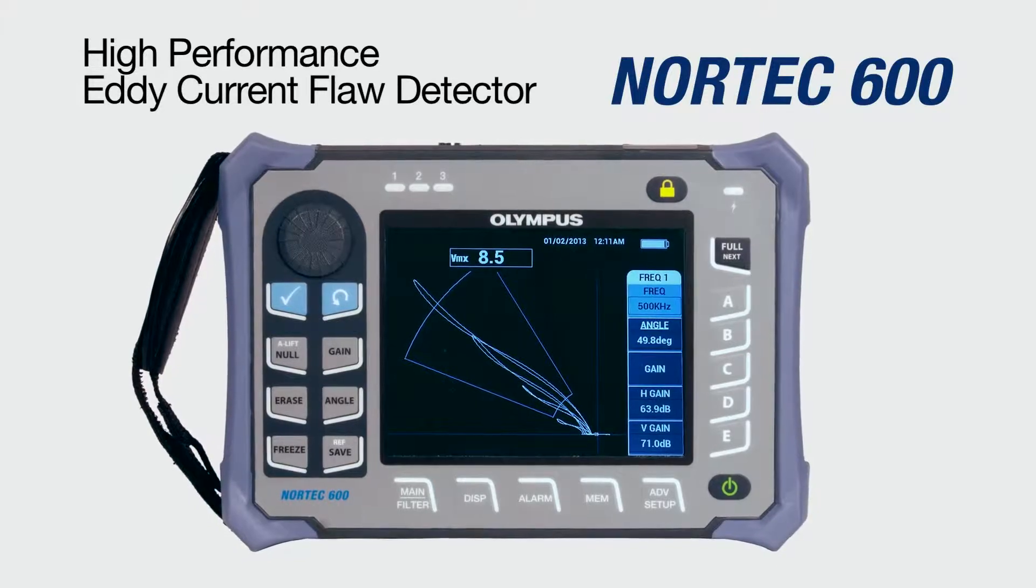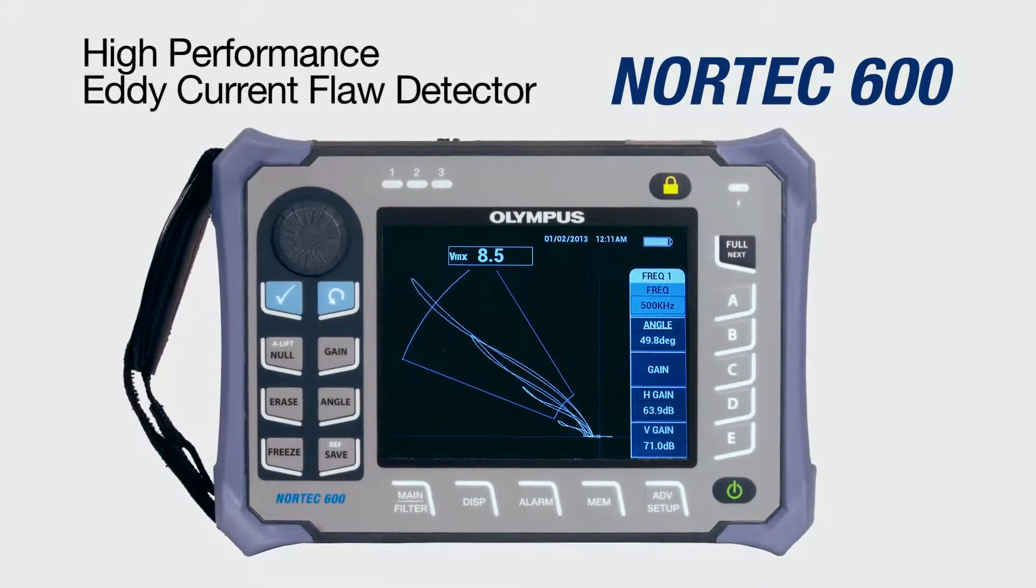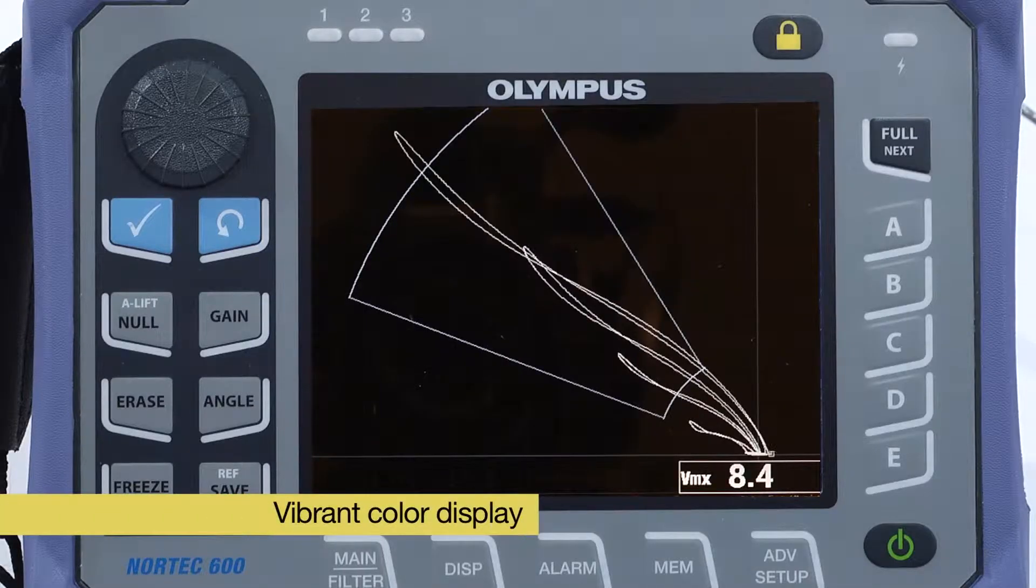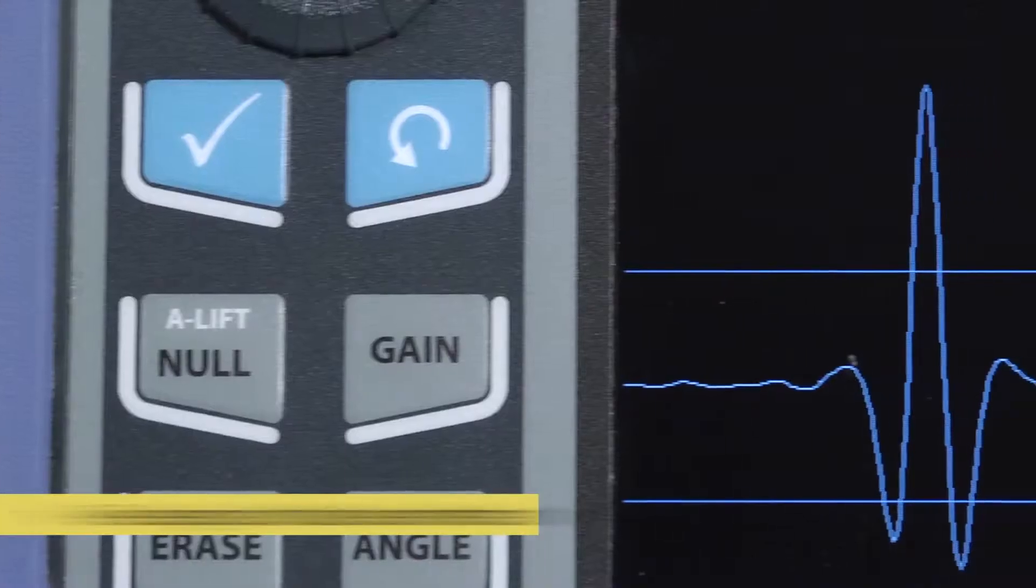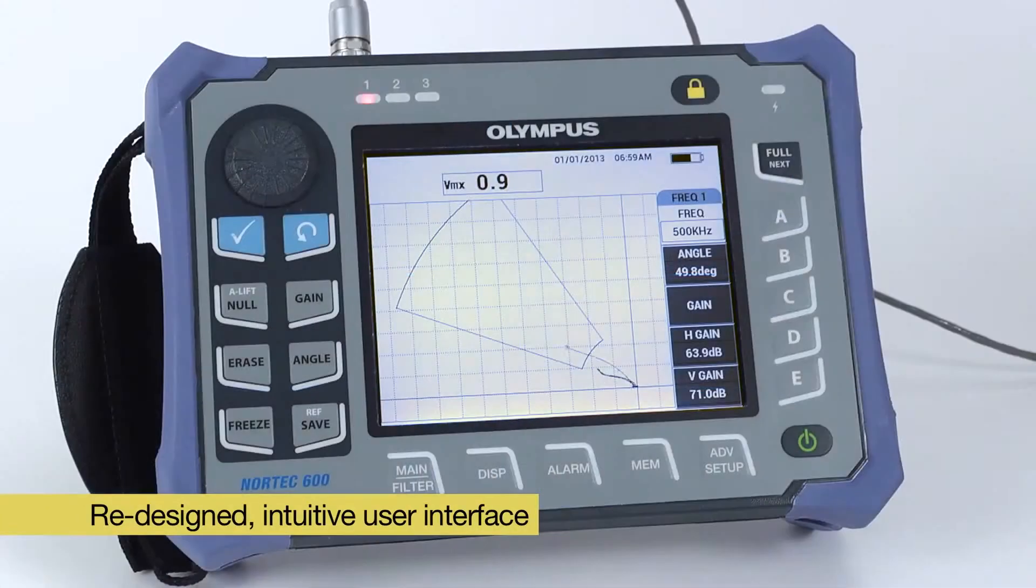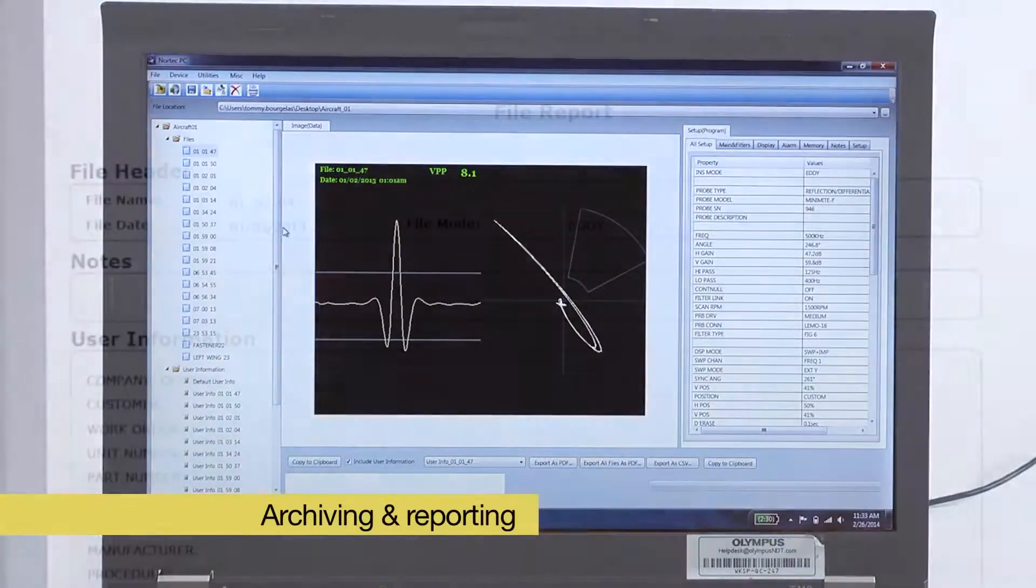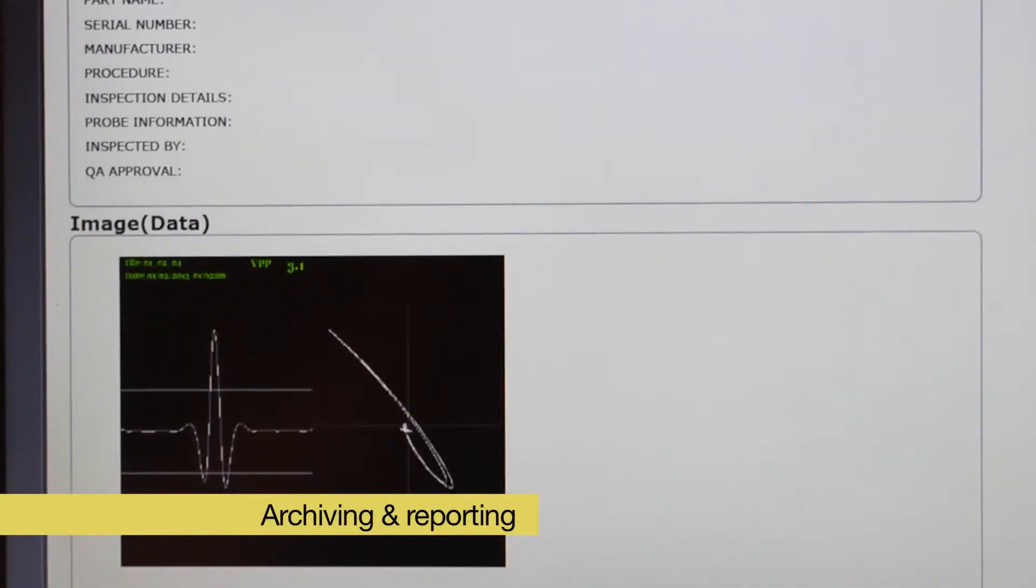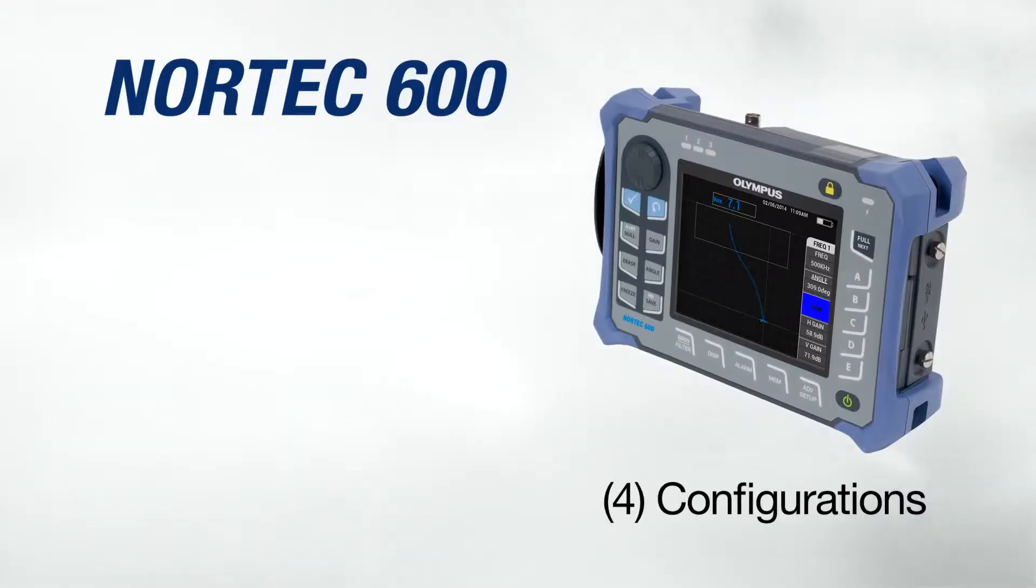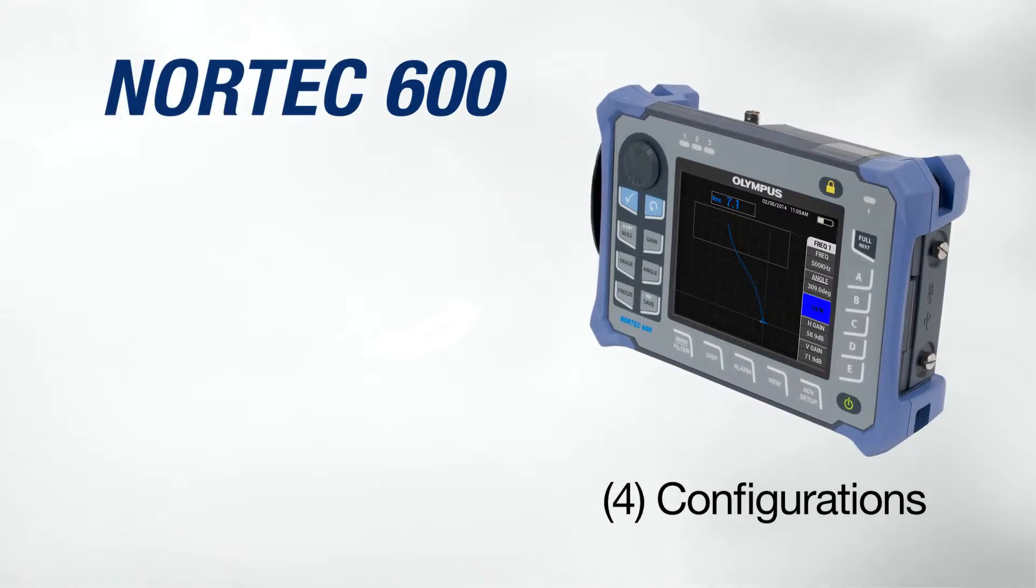The Nortec 600 is a rugged, field-ready instrument that features a vibrant display to accommodate any lighting condition. It has a completely redesigned user interface that is very intuitive for any level of user. It also offers a complete archiving and reporting solution.